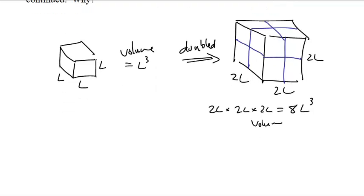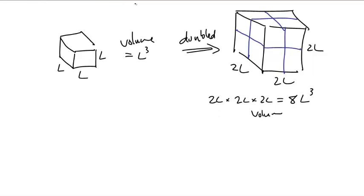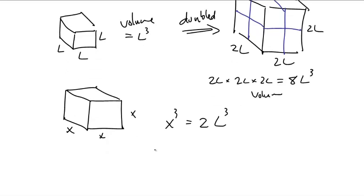But the problem is, what did they need to do? They needed to make an altar that somehow was x by x by x, and they wanted x cubed to be twice the volume of L cubed. And what they needed, how do you solve for x? Take the cube root of both sides.